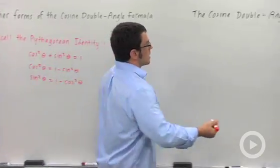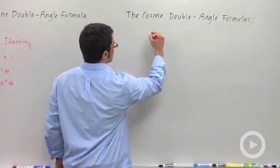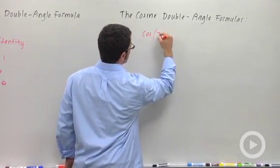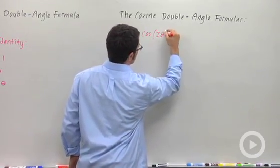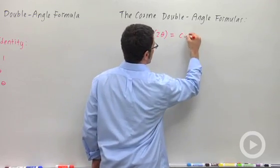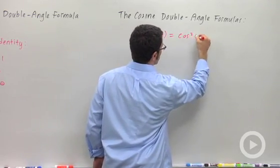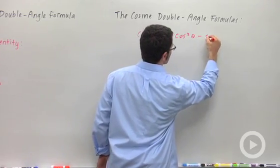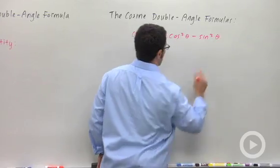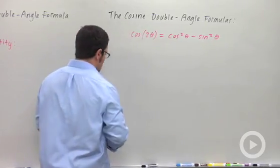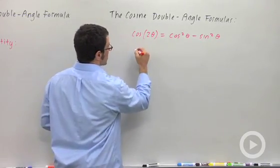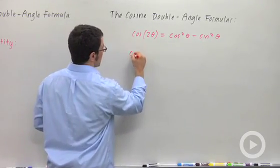The original cosine double angle formula is this: cosine of two theta equals cosine squared theta minus sine squared theta. But I can use the Pythagorean identities to rewrite this.